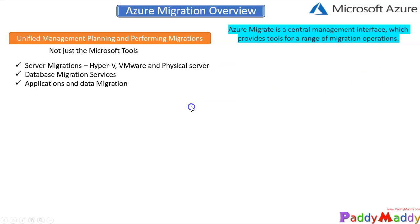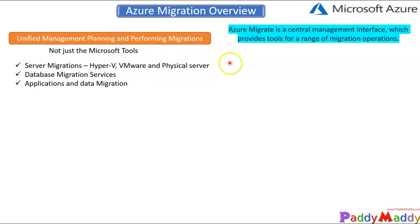Azure Migrate includes a few critical migration categories. For server migration, the servers can be virtualized or physical — for example, Hyper-V instances or physical servers that you want to migrate completely to the cloud. This works not only with Hyper-V but also with VMware and physical servers. We're going to do a demo on Hyper-V migration in the next lecture.